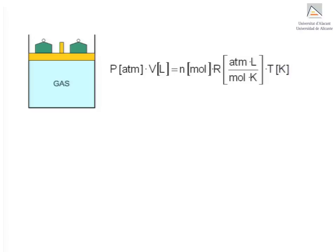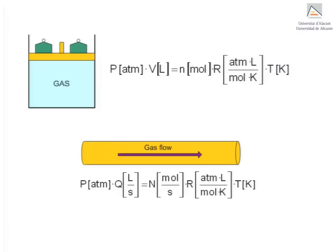In an open system, on the other hand, where mass flows into and out of the vessel, V has to be replaced by the volumetric flow rate measured in liters per second, and N by the molar flow rate in moles a second. Only then can the equation of state for ideal gas be used for open systems.